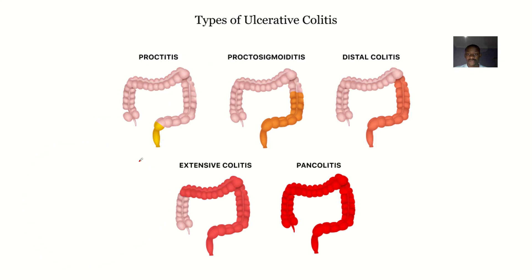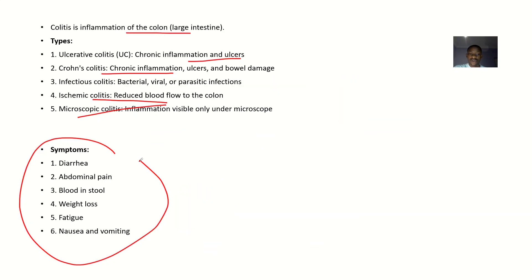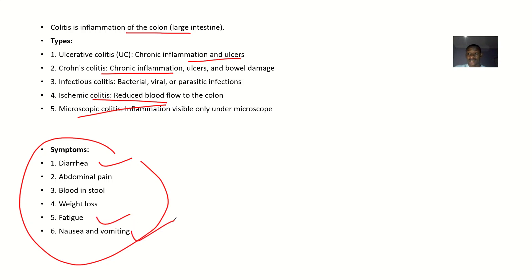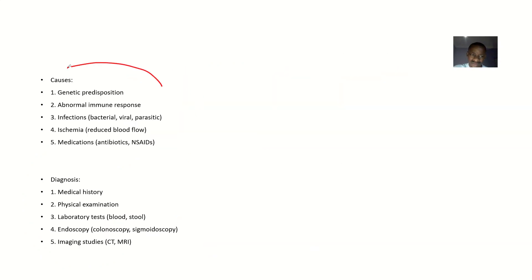What would a patient with inflammation of the colon complain about? The patient will tell you they are passing very watery stool. They'll complain about abdominal pain and blood in the stool — either melena, where the stool is very dark, or hematochezia, where the stool is bright red. They may also experience weight loss, fatigue, and nausea and vomiting.